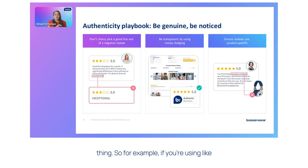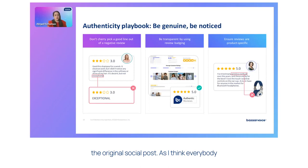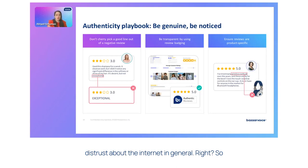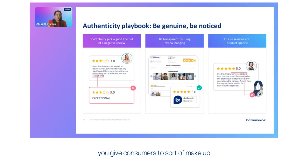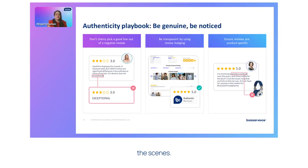For example, if you're using a social post and using that image, make it so they can click back to the original social post. As everyone on this call is aware, we're seeing growing distrust about the internet in general. The more transparent you are, the less opportunity you give consumers to make up stories about what might be happening behind the scenes.